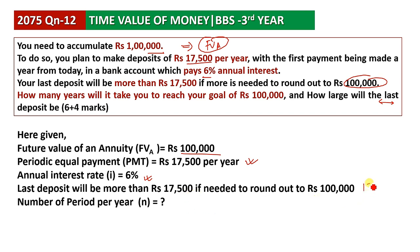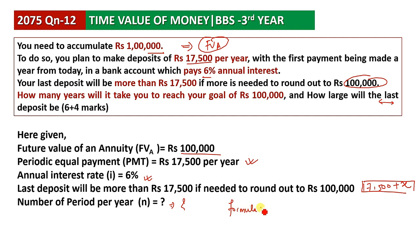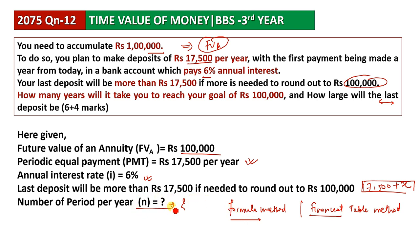So, we will get the answer using two methods: the formula method and the financial table. There is also the trial and error method. We will cover the formula method and financial table approach.